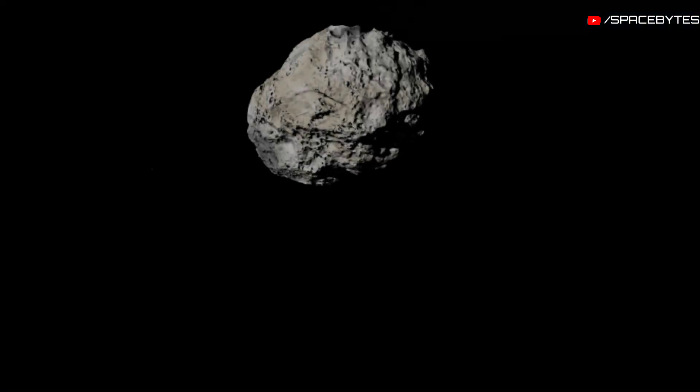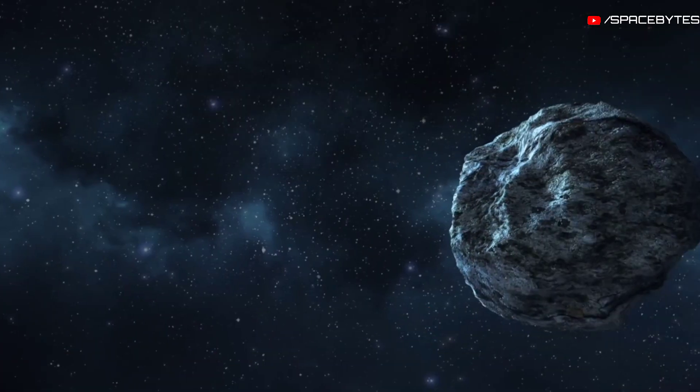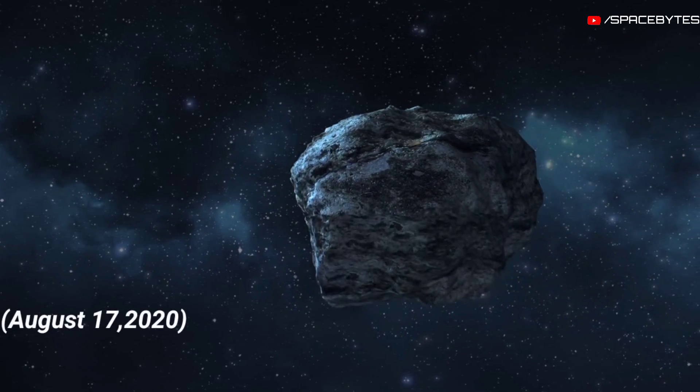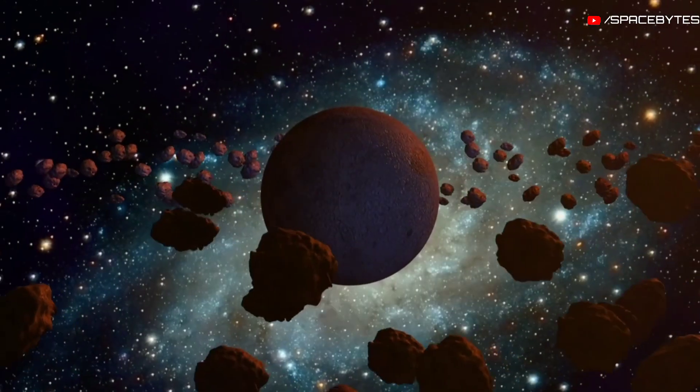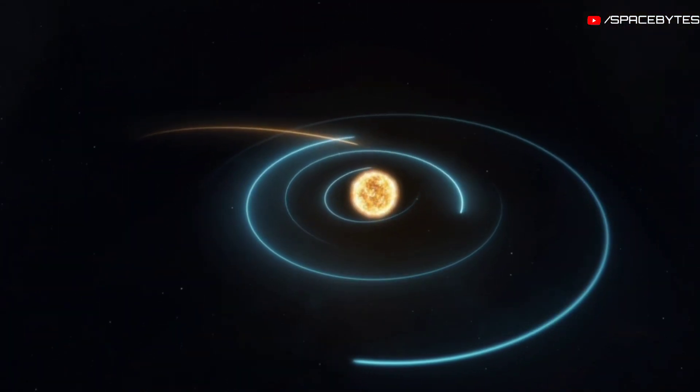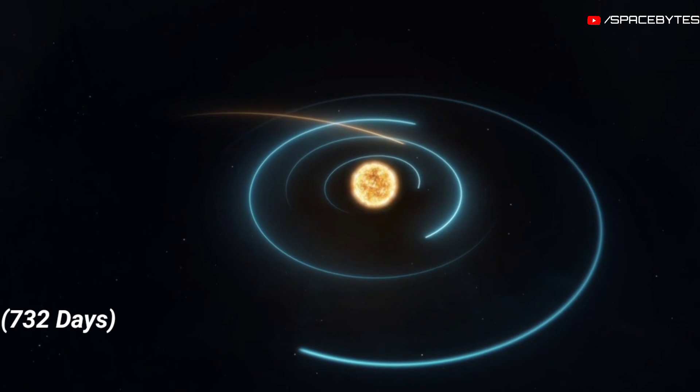And the third asteroid on August 22: the asteroid 2020 QW3 was detected on August 17th, 2020. This near-Earth object belongs to the Amor group. It makes one orbit around the Sun in 732 days.